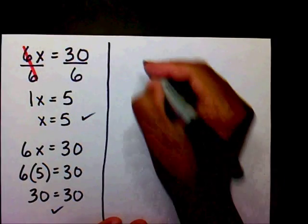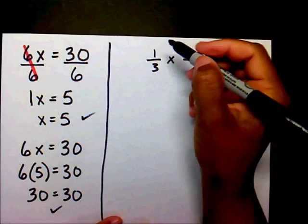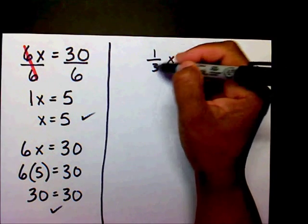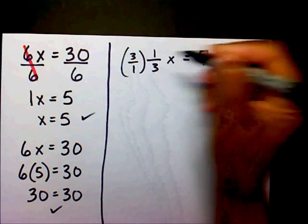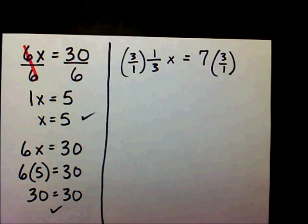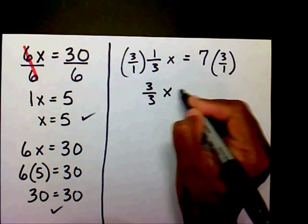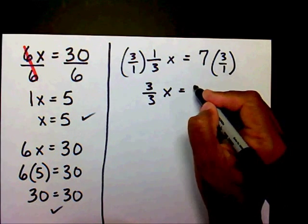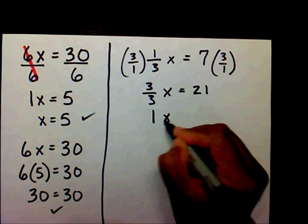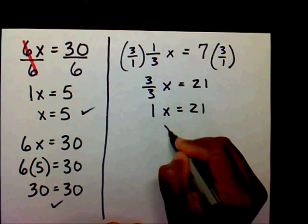And the last problem you have 1/3 x equals 7. I want to multiply both sides by the reciprocal of 1/3 which is 3 over 1. 3 times 1 is 3, 1 times 3 is 3. We know that 3 over 3 equals 1. x equals 21. Instead of writing 1x equals 21, we can just write x equals 21.